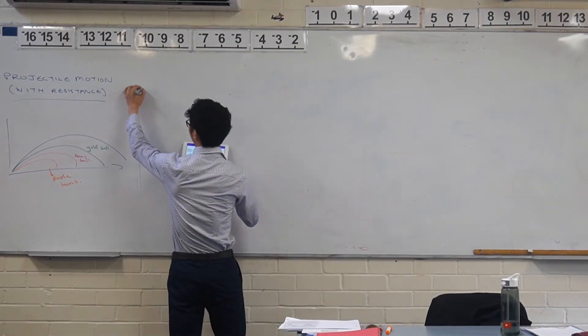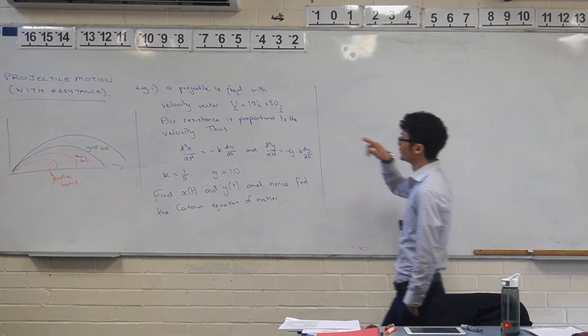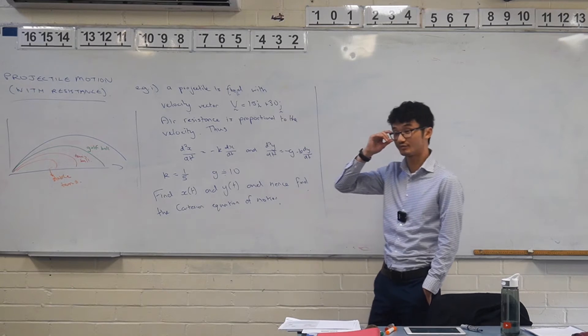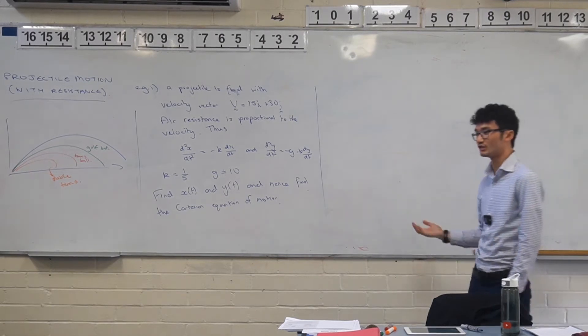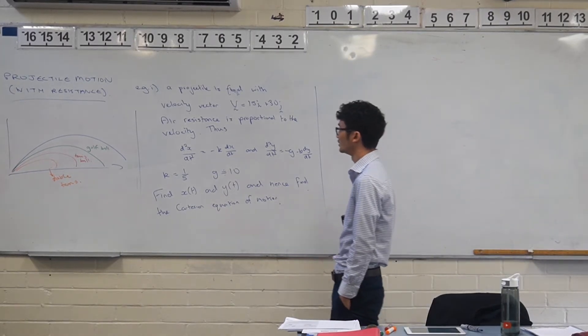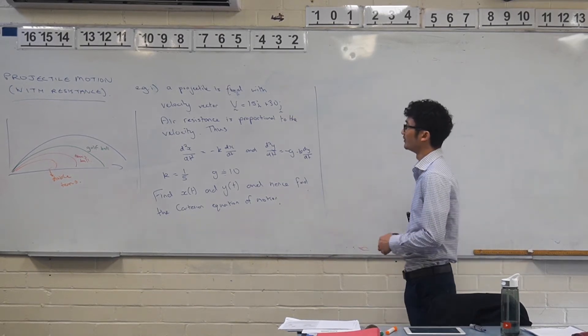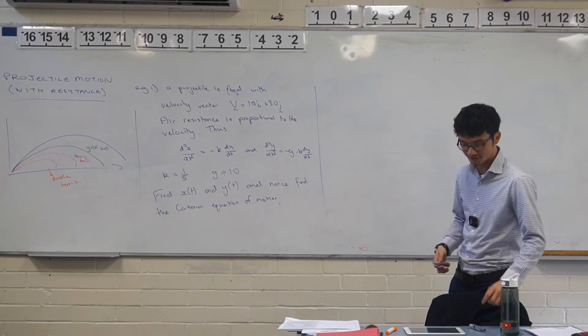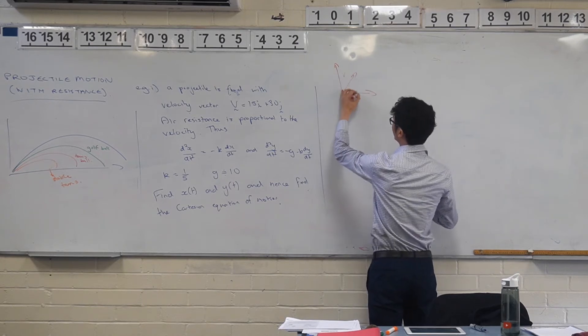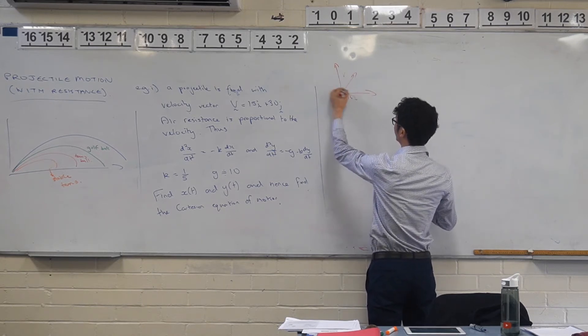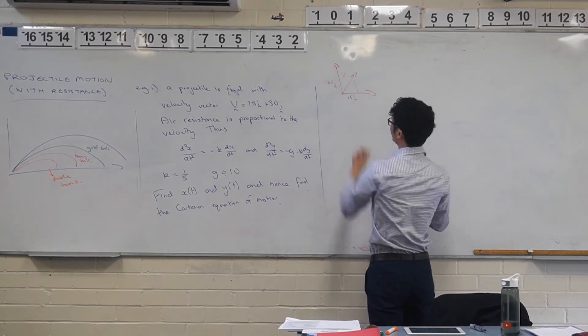As you've noticed, they sort of talk about this firstly in a vector form here. They can ask you this in any way they like: in terms of vectors, a Cartesian equation, or a parametric equation. You just have to be aware and be able to interpret what this is really saying. Like v equals 15i plus 30j, that's in component form, right?